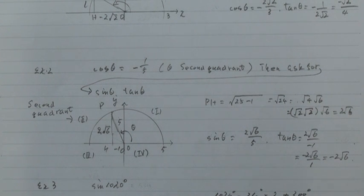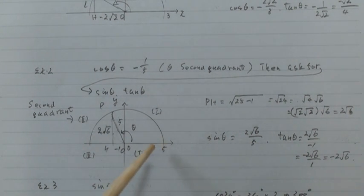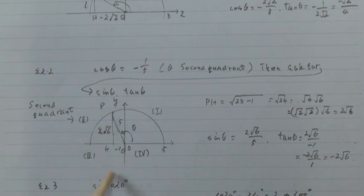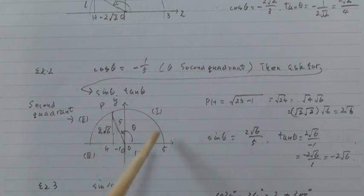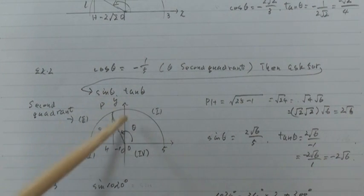And theta in second quadrant. First quadrant, second quadrant, third quadrant, and fourth quadrant. One, two, three, four. And this is second quadrant.